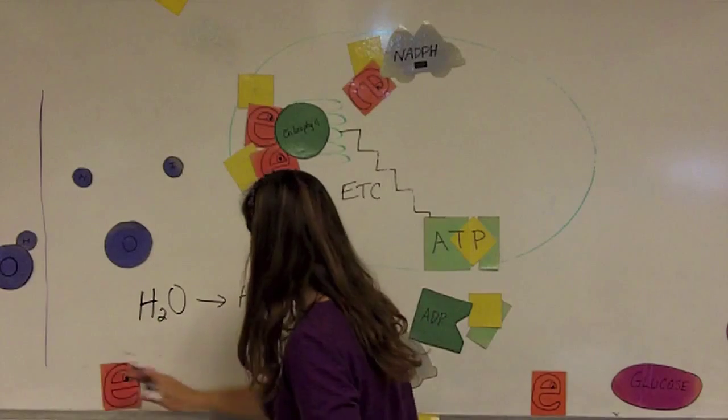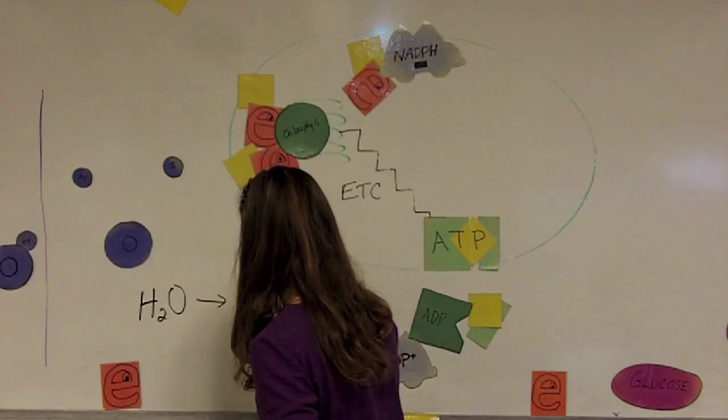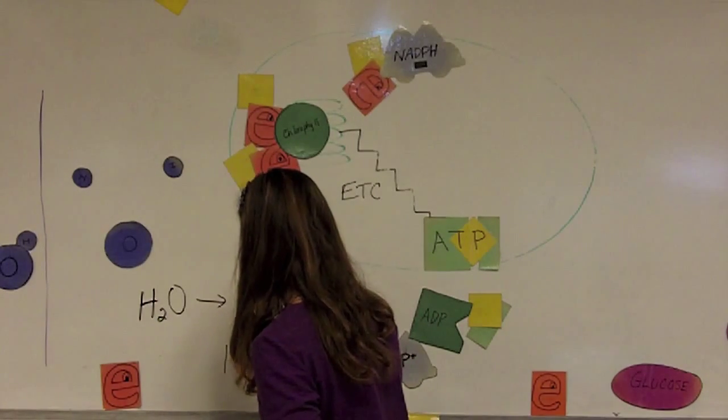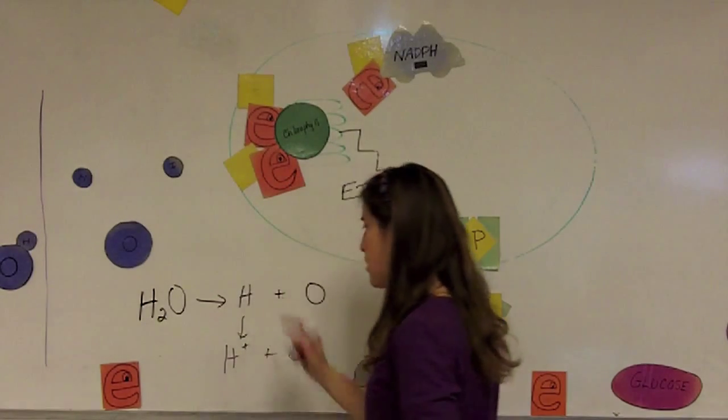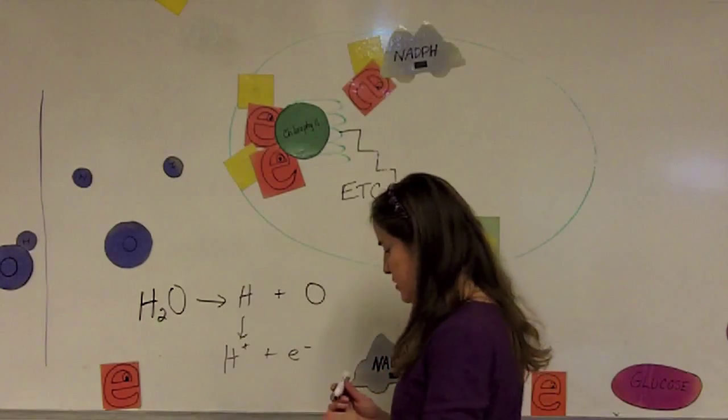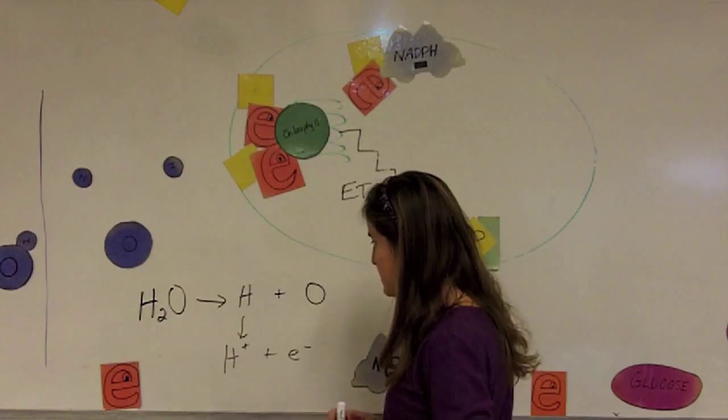But the hydrogen atoms themselves can also be separated out into a hydrogen ion and an electron. Because remember, a hydrogen atom is simply a proton with an electron around it. A proton is the same as a hydrogen ion.